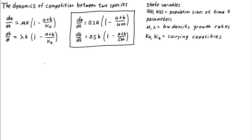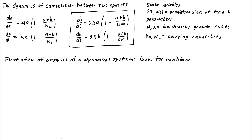When analyzing the behavior of a dynamical system, whether it be a two-dimensional system of differential equations like we have here, or a single differential equation, or even a discrete dynamical system, one of the first things we want to do is look for equilibria. Equilibria are special solutions of a dynamical system where the state variables are constant. Since the derivative of a constant is zero, for a differential equation, finding an equilibrium means setting the derivatives equal to zero.